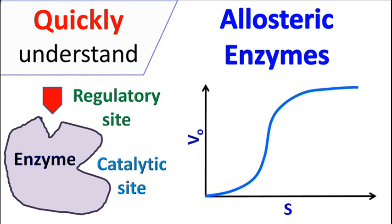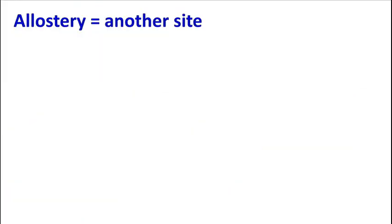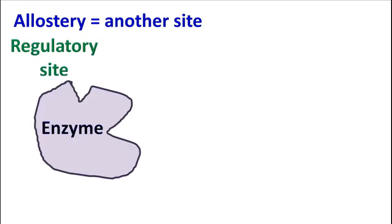Hey guys, quick biochemistry basics here. Let's talk about allosteric enzymes. The term allostery means another site. These are enzymes that have a regulatory site and a catalytic site.